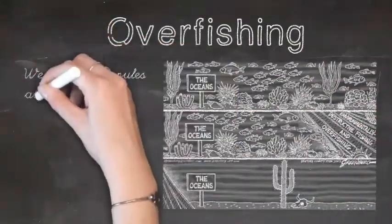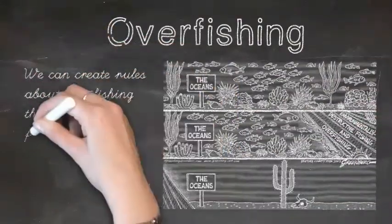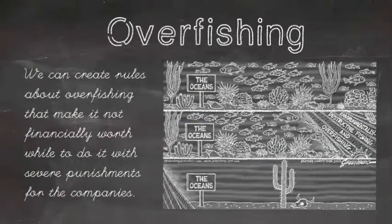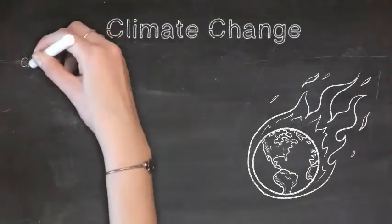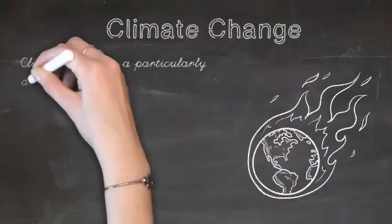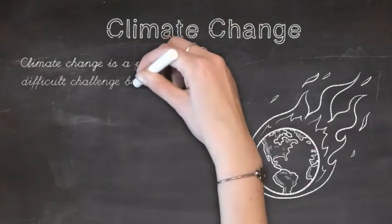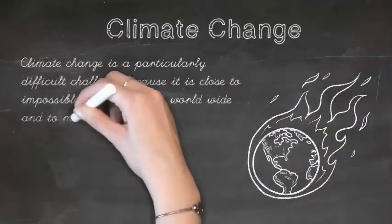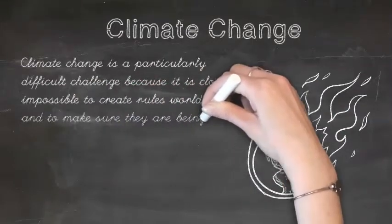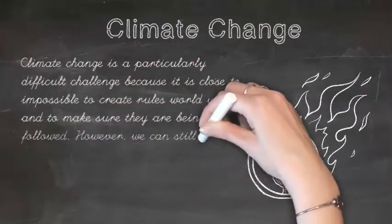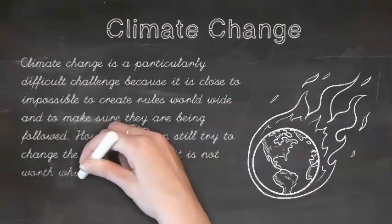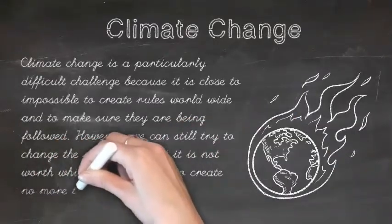In the case of overfishing, we can create rules that make it not financially worthwhile to overfish, with severe punishments. The case of climate change is particularly difficult, because it is close to impossible to create rules worldwide and to make sure they are being followed. However, we can still try to change the payoffs so that it is worthwhile for companies to create no more than a certain amount of carbon emissions.